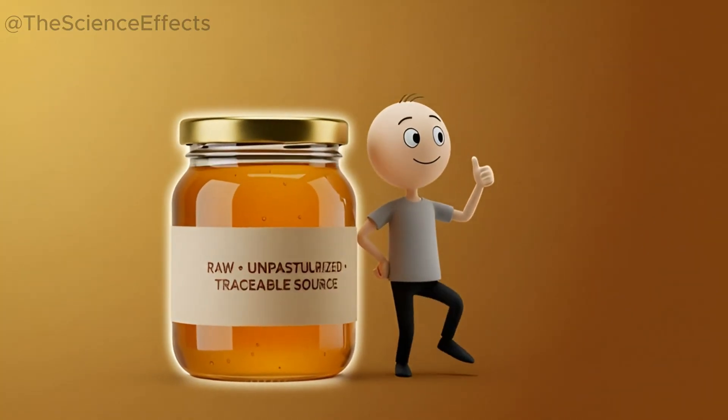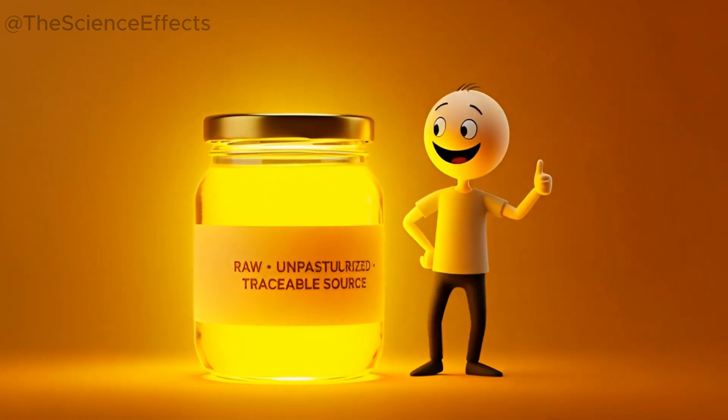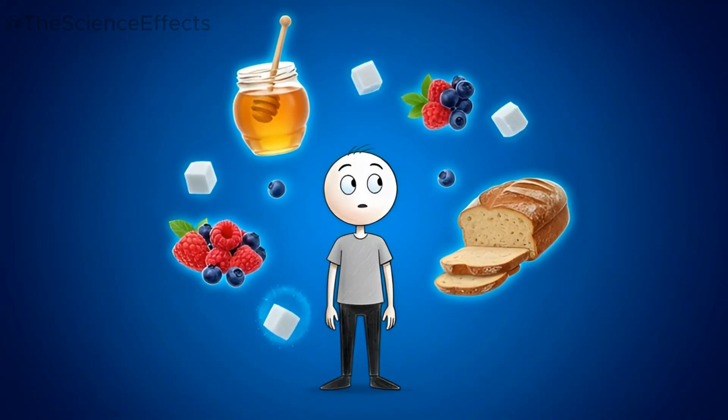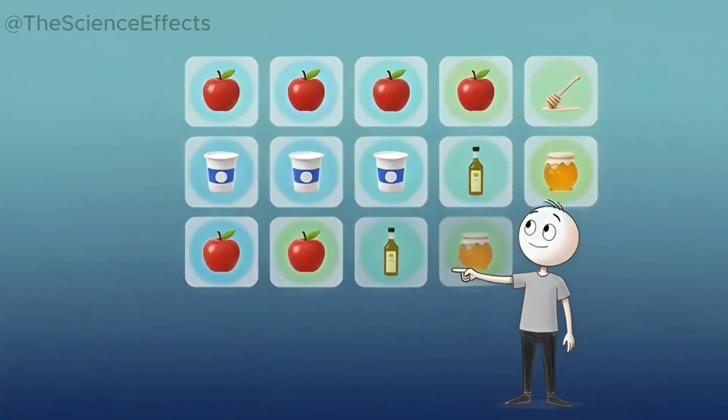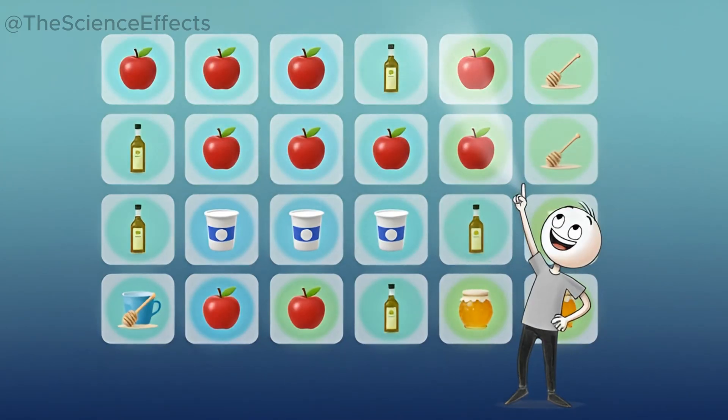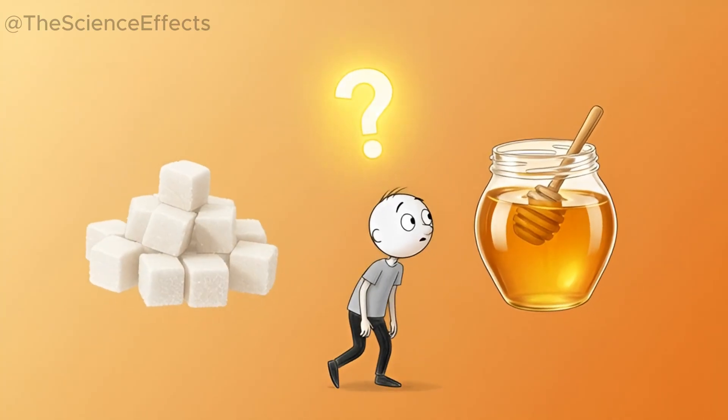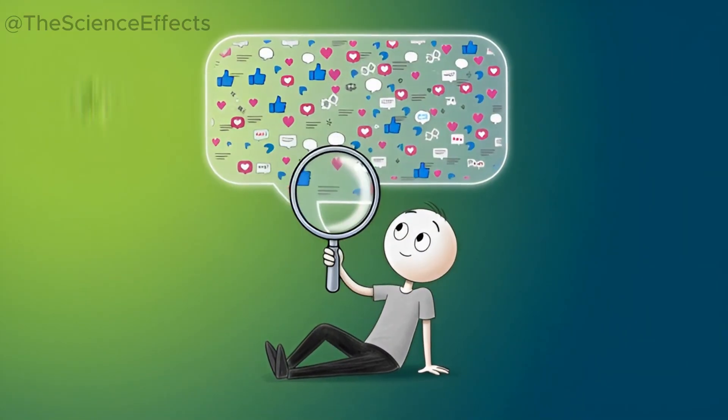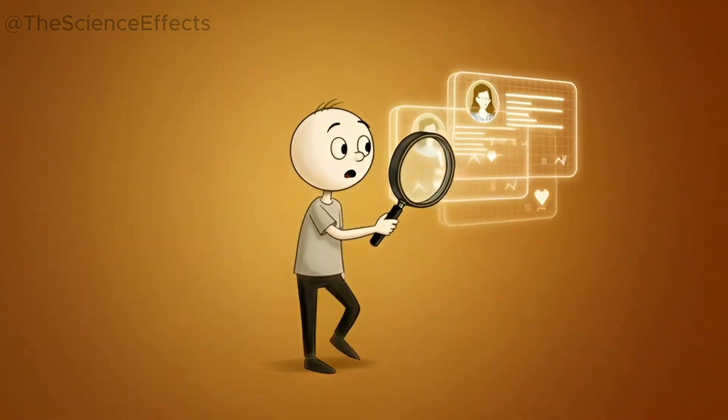Choosing raw, unpasteurized honey from a source you trust is the only way to know you're getting the real deal. It's wild how much is hidden inside the food we eat every day. I've done other deep-dives on foods we all think are healthy, which you can check out, but I want to know about you. Have you ever tried swapping sugar for honey? Did you notice anything? Let me know your experience in the comments. I read all of them.